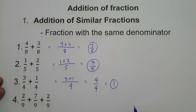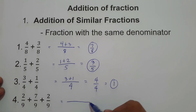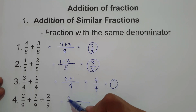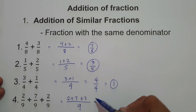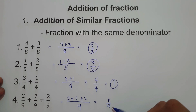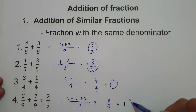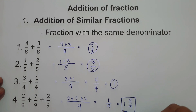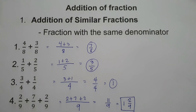Number 4, go ahead and find the sum of this fraction. We have 2 over 9 plus 7 over 9 plus 2 over 9. We have the same denominator, that is 9. And then we're going to add 2 plus 7 plus 2. That is 11. So we have 11 over 9. Since 11 over 9 is an improper fraction, we can divide 11 by 9. The answer is 1, and the remainder is 2 over 9. Always remember, whenever we add fractions with the same denominator, we just simply copy the denominator and then add the numerator.